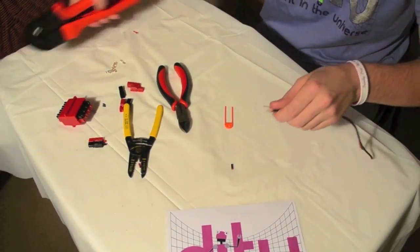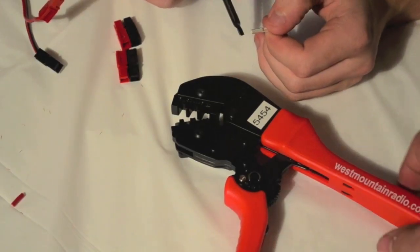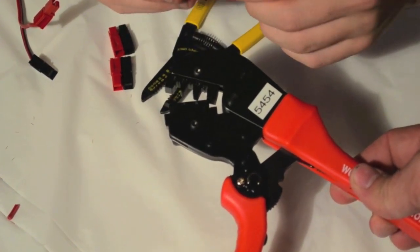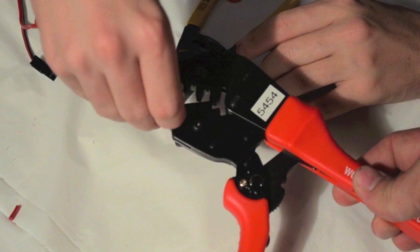When crimping your wires, the awkward black box on the side of the crimping tool is where you will set your Anderson connector to ensure that it sets properly and crimps right.